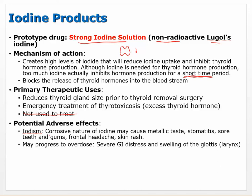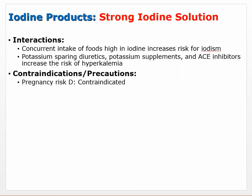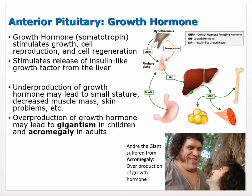Potential adverse effects of strong iodine solution — called iodism — include metallic taste, stomatitis (mouth inflammation), sore teeth and gums, frontal headache, and skin rash. Overdose may cause severe GI distress and swelling of the glottis. Drug interactions: foods high in iodine increase the risk. Potassium-sparing diuretics, potassium supplements, and ACE inhibitors all increase hyperkalemia risk. This is pregnancy category D.